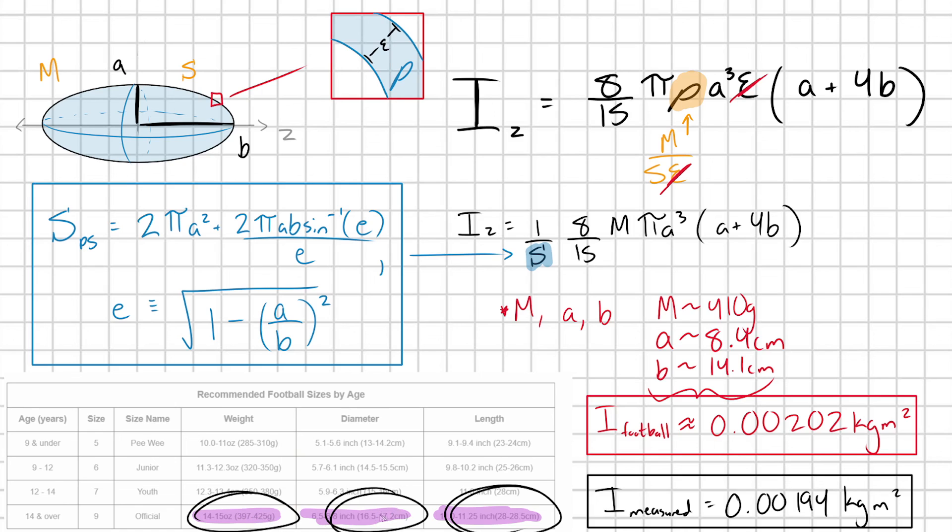I probably could have cherry-picked random values between each of these ranges in order to come up with a value that matched 0.00194, even though we know this prolate spheroid is going to be slightly off from the shape of a real football.